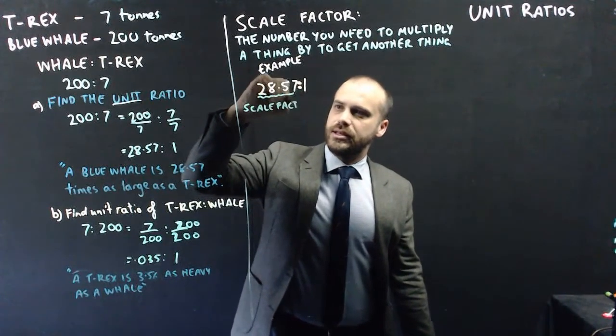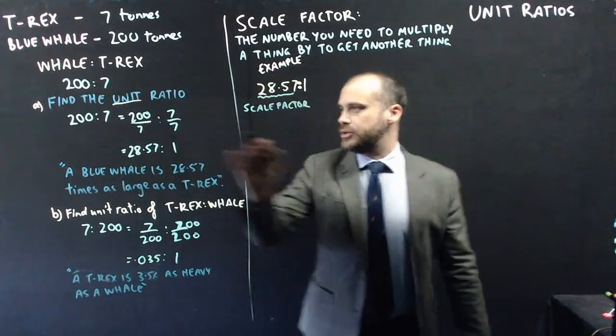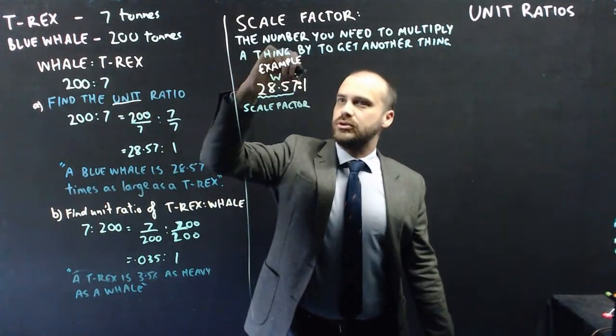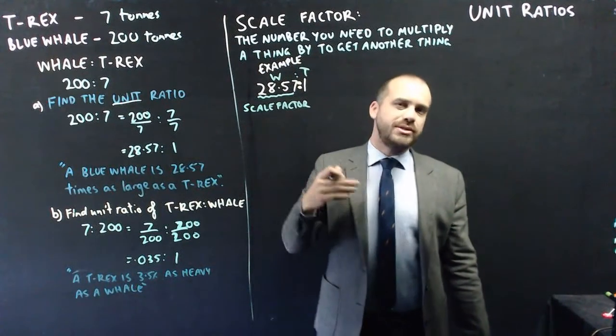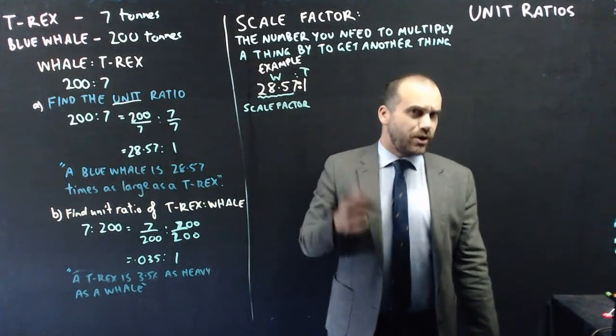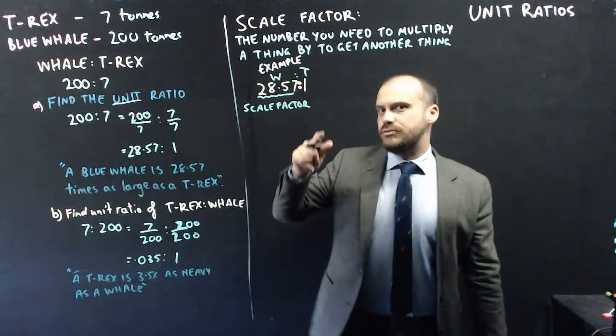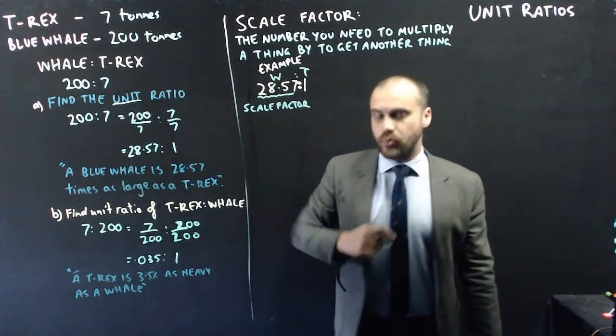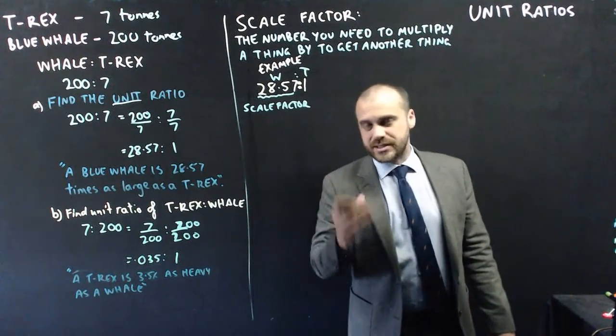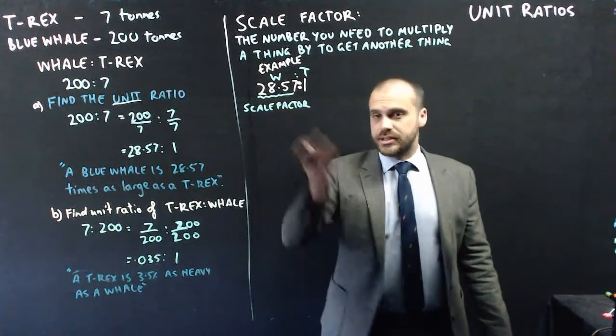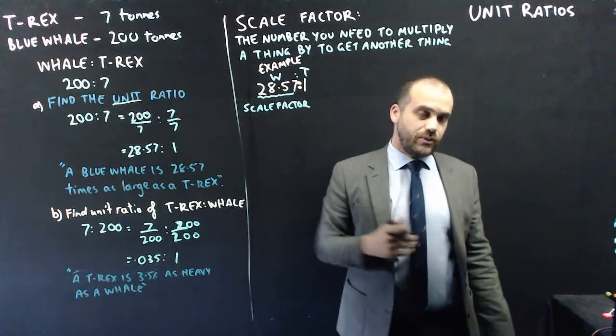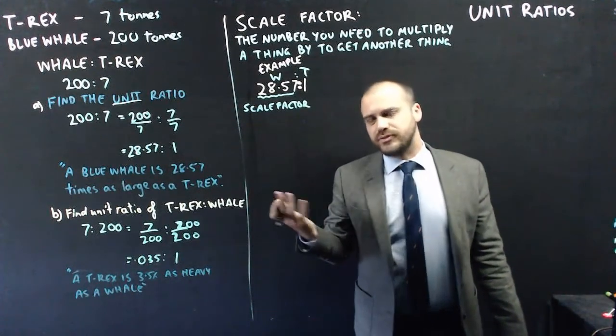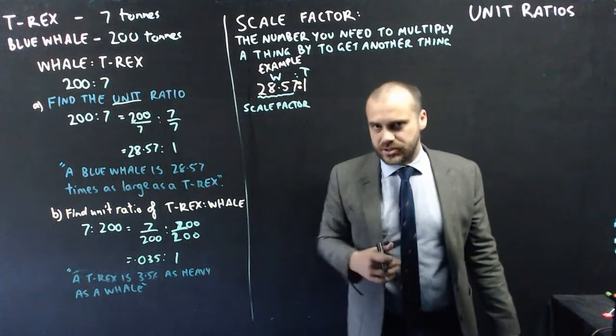Now, in this example, this ratio is whale to T-Rex. And the scale factor is the number you would need to multiply the T-Rex by to make a T-Rex as big as a whale. We can think of it also as an enlargement factor in this case because we're enlarging our T-Rex to make it as large as our whale. But it also has some more useful things because you're not a mad scientist.